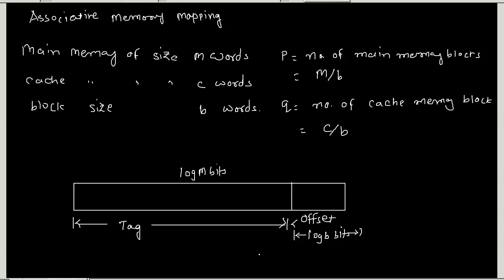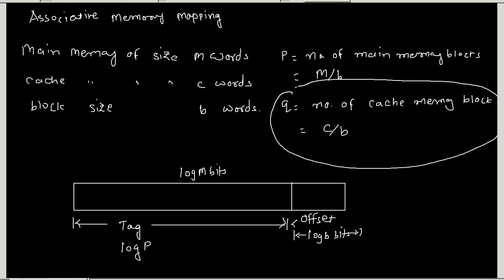There is no index part like in direct cache mapping. The size of tag bits would be log p. If you observe, we don't need q here. So if we don't have q it's okay — we can still perform associative memory mapping. The quantity q, that is the number of cache memory blocks, is not required to count how many bits are needed for offset and tag.